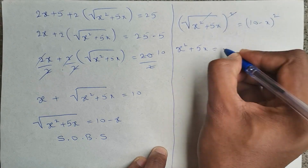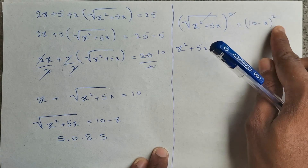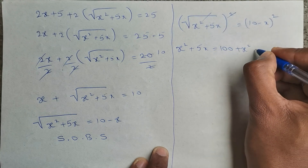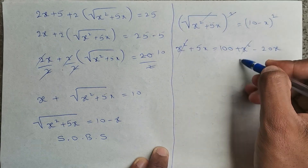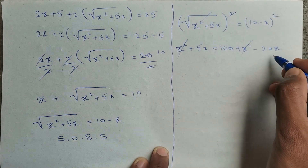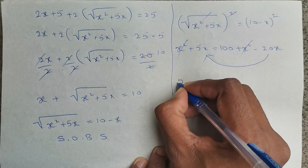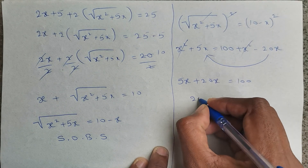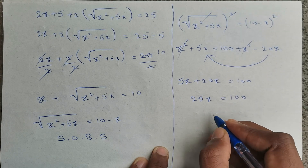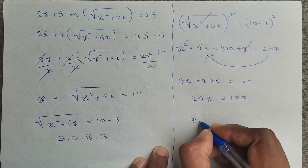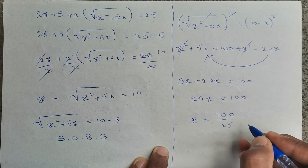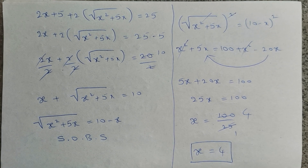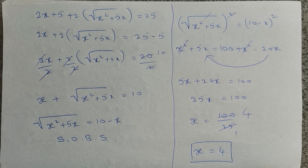We remain with x squared plus 5x equals the expansion of (10 minus x) squared, which is 100 plus x squared minus 20x. The x squared cancels on both sides. Bringing minus 20x to the left gives 5x plus 20x equals 100, so 25x equals 100, and x equals 100 divided by 25, giving x equals 4.